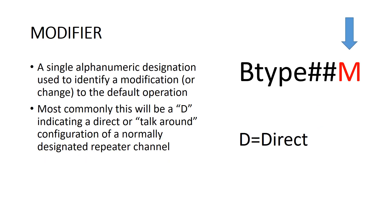The modifier is a single alphanumeric designation used to identify a modification, or change, to the default operation. Most commonly, this will be a D, indicating a direct or talk-around configuration of a normally designated repeater channel.